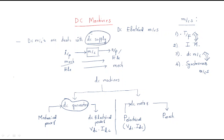What makes DC machines unique is that they completely deal with DC supply. Other machines such as the transformer, induction machine, and synchronous machine all deal with AC supply. This particular machine uses DC supply, which is why it is specifically called a DC machine — either a DC generator or a DC motor.